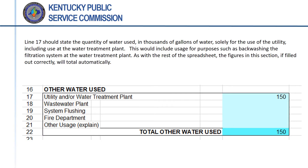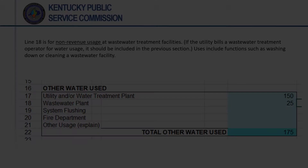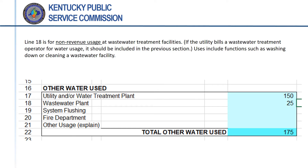Water used by the utility for its own purposes, principally in the water treatment plant, should be entered on line 17. This would include functions such as back flushing of filters, wash downs of the plant, and other uses at the treatment plant or other facilities such as pump stations. If the utility operates a wastewater treatment plant or provides water at no cost to a wastewater treatment plant, it should be entered on line 18. This would include functions such as cleaning the plant.